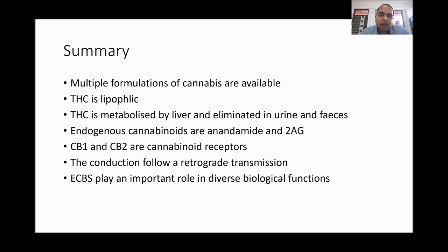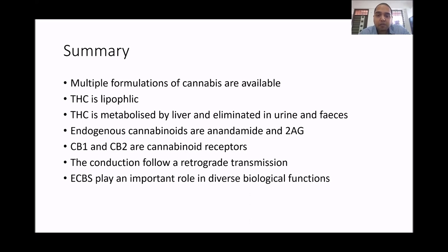To summarize: there are multiple formulations of cannabis available. THC is lipophilic, metabolized by the liver, and eliminated in urine and feces. Endogenous cannabinoids include anandamide and 2-AG, though there are others like virodhamine and noladin. CB1 and CB2 are the main cannabinoid receptors, though others like GPR52 and GPR55 are also implicated. Signaling follows retrograde transmission, and the endocannabinoid system plays an important role in diverse biological functions.